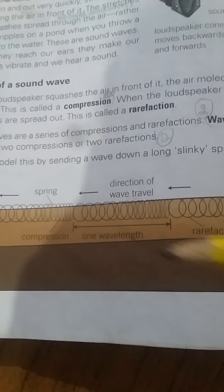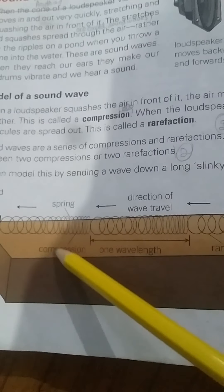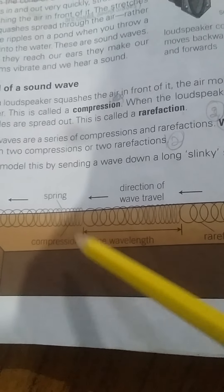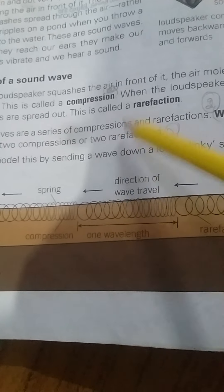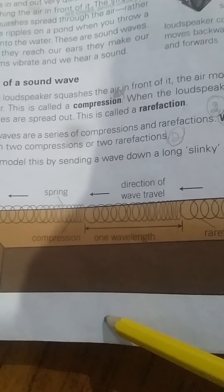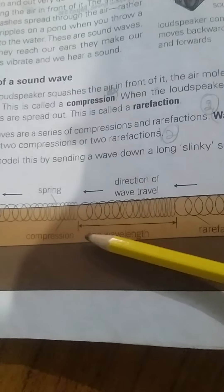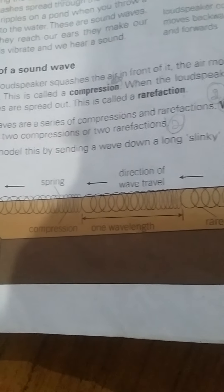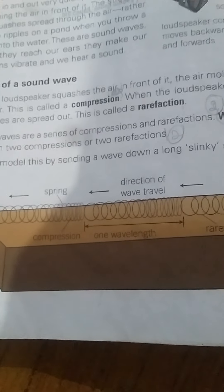Longitudinal waves means the vibrations move forward and backward, not up and down. You can see the waves on the spring moving forward and backward. This is different from waves on the sea, which move in an upward and downward motion — those are not longitudinal waves.